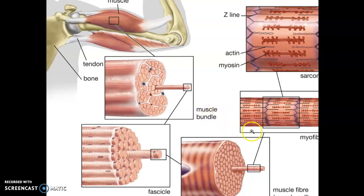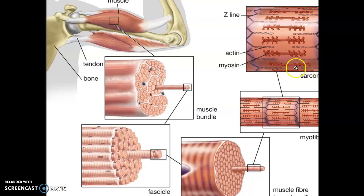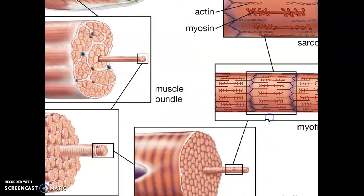The myofibrils are the repeated actin and myosin. The dark band is myosin, the lighter band is actin. This is a sarcomere: the actin is attached to the Z-disc, the myosin is attached to the M-line running down the middle. The H-zone contains only myosin. The A-band runs from the beginning to the end of the myosin. The I-band is where you only have actin.